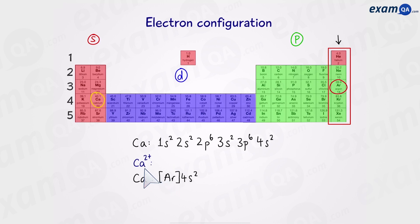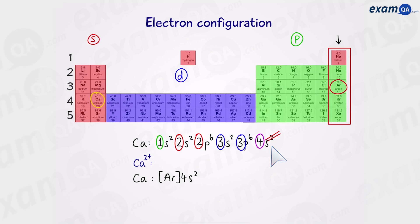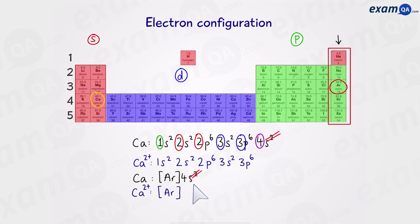Let's try the electron configuration for a calcium 2+ ion. When writing the configuration of an ion, first identify the highest shell number — in this case the fourth shell. Since we have a 2+ ion, we remove two electrons from the s subshell in the fourth shell. That leaves the fourth shell completely empty, so we can remove it. In shorthand, that just gives us argon. So basically a calcium ion and an argon atom have the same electron configuration.